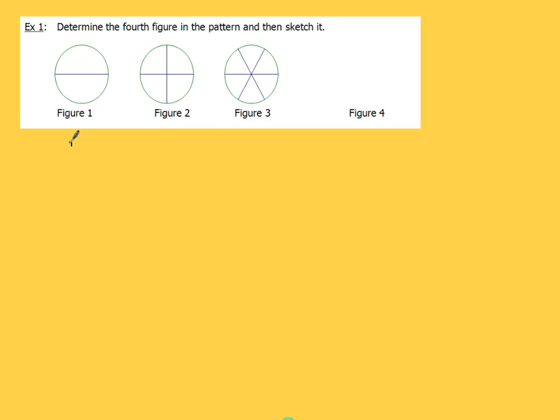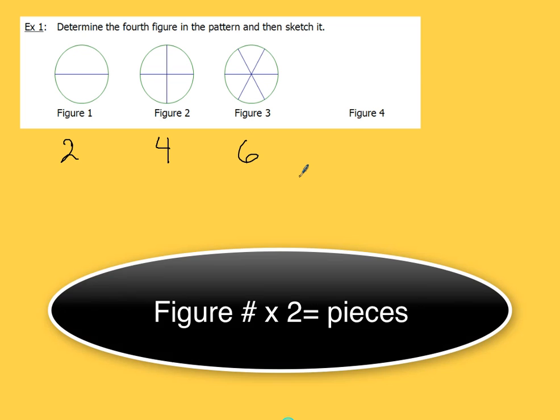So we've got 2 pieces, 4 pieces, and 6 pieces. So in figure number 4, we take a look at it. Each circle just gets divided into twice as many equal regions as the figure number. So in figure number 2, I've got 4 pieces altogether. In figure number 3, I've got 6 pieces. So if I were to continue that pattern, figure number 4, that's going to be divided up into 8 pieces altogether.